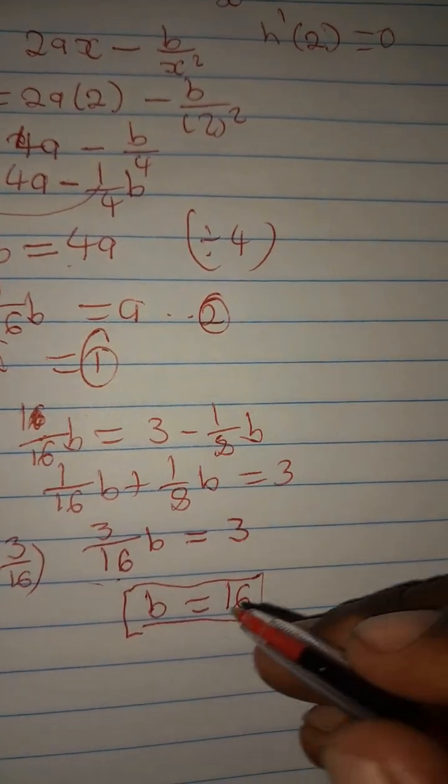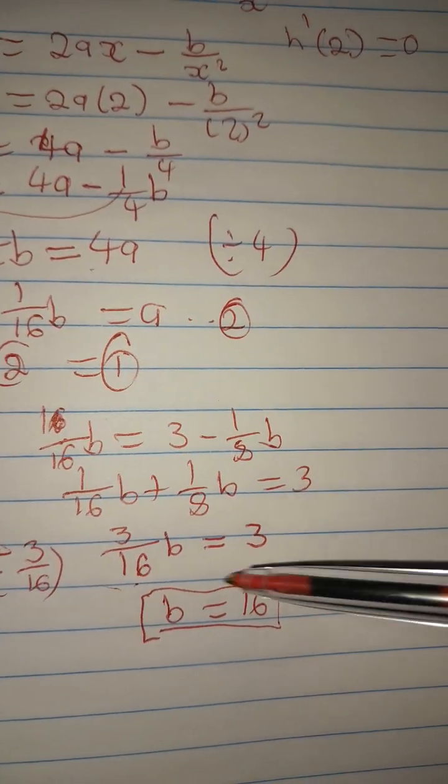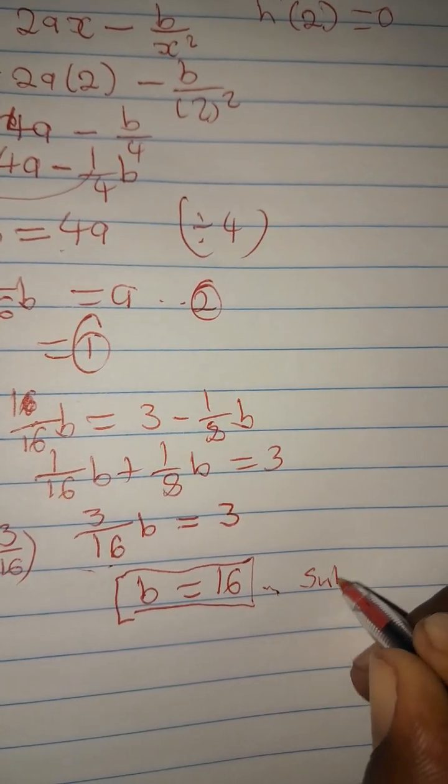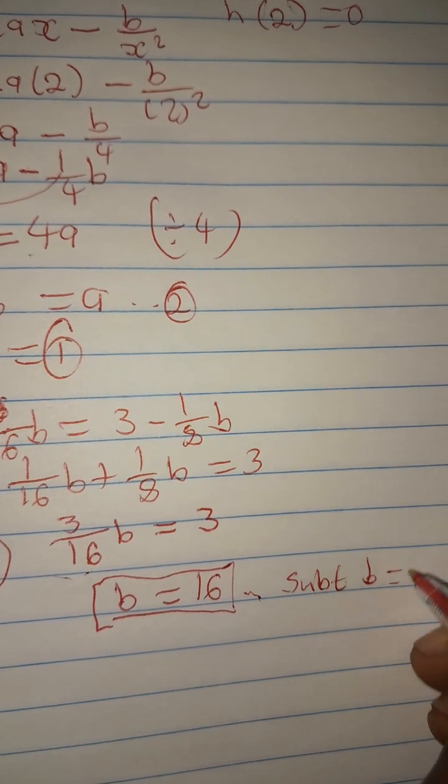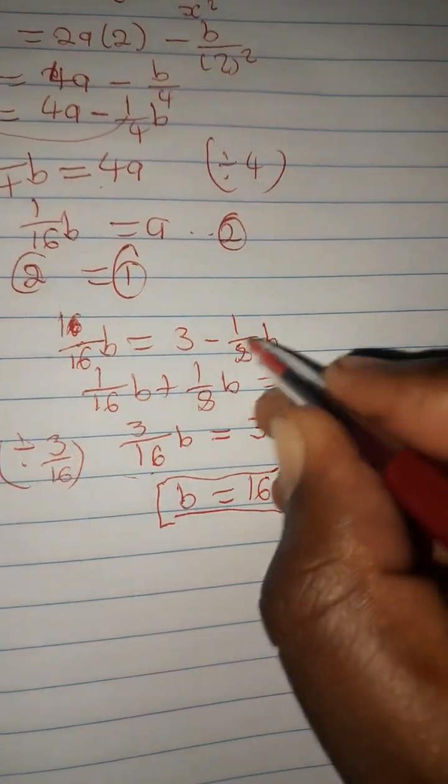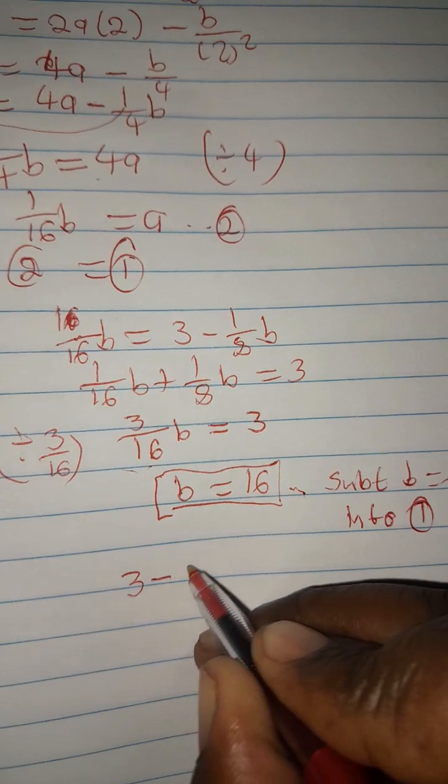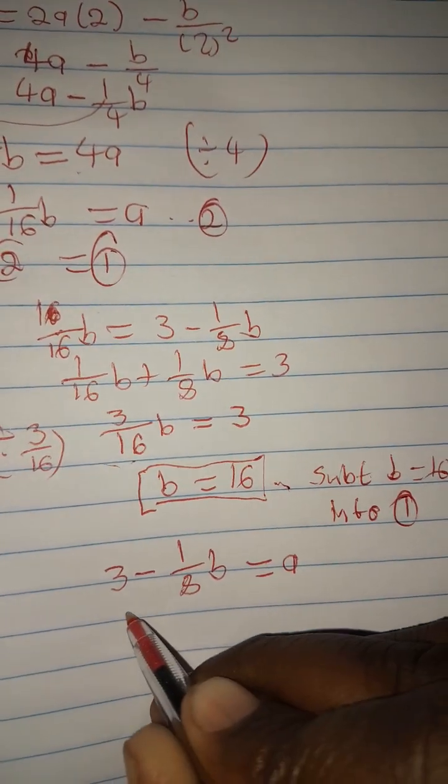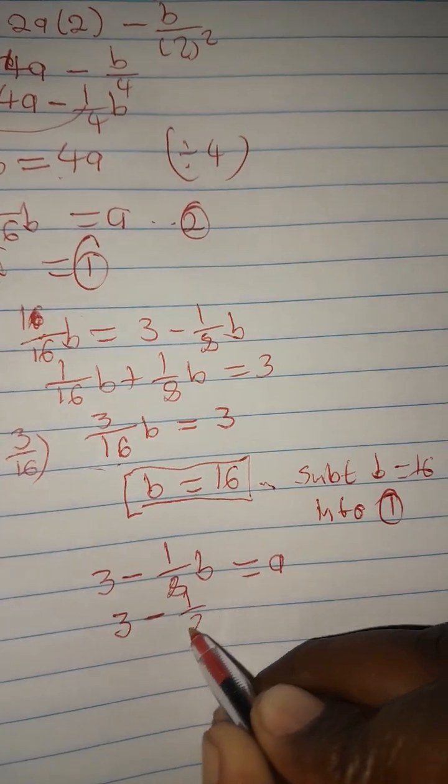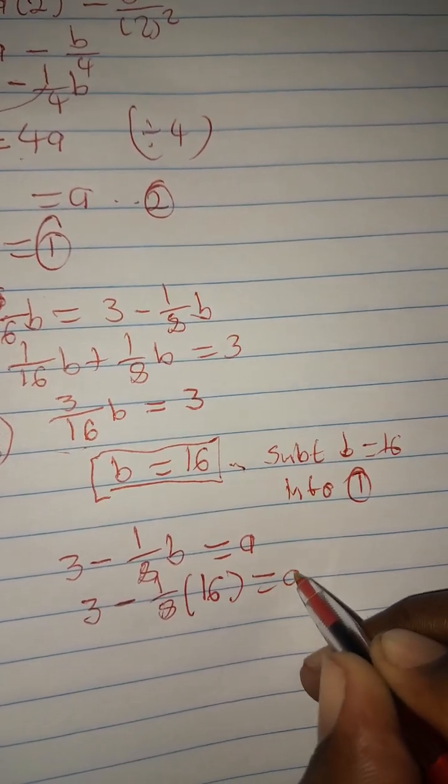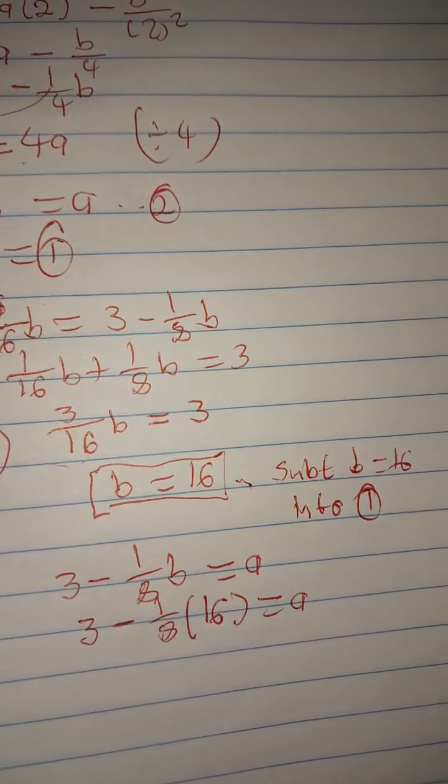So now we need to find a. What we could do is taking this, substitute b equals 16 into equation 1. Remember, your equation 1 was given as 3 minus 1 over 8b equals a here. So what we could do is just saying 3, 1 over 8, then let's place 16 here where there is b. Then let's see what are we getting.